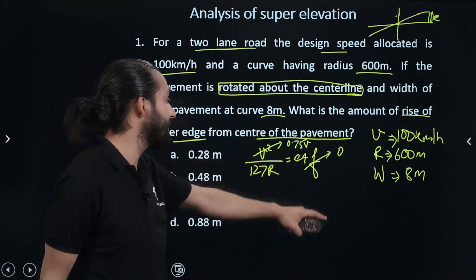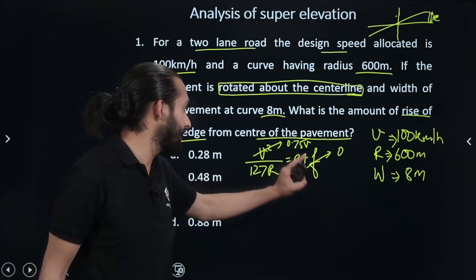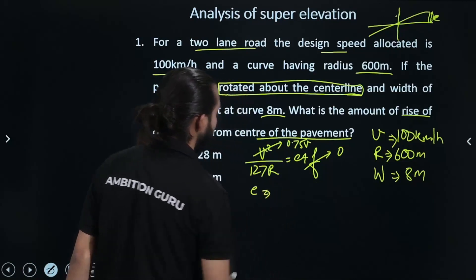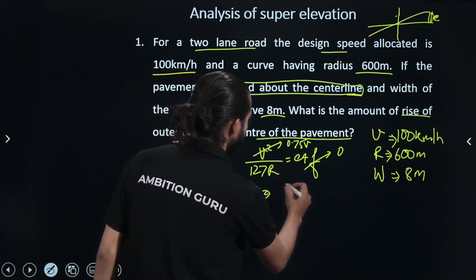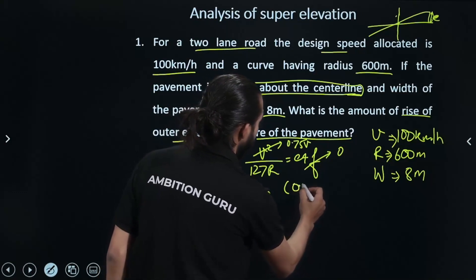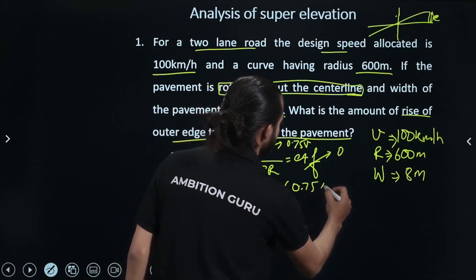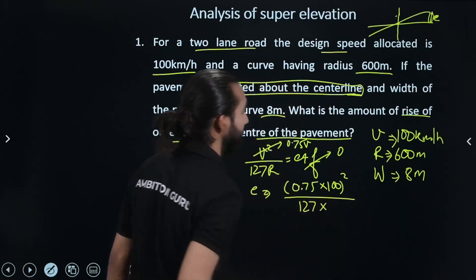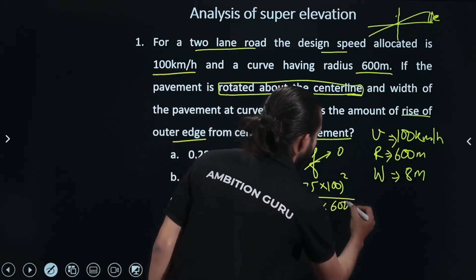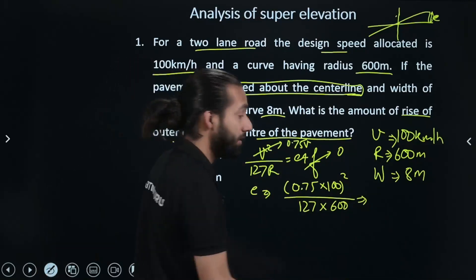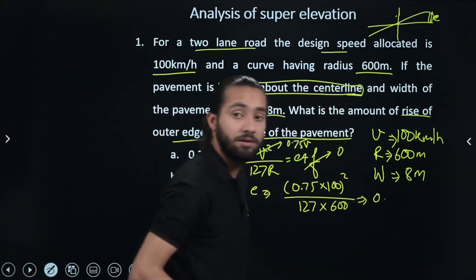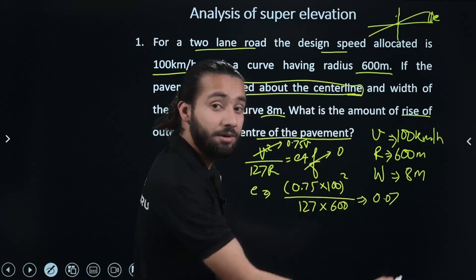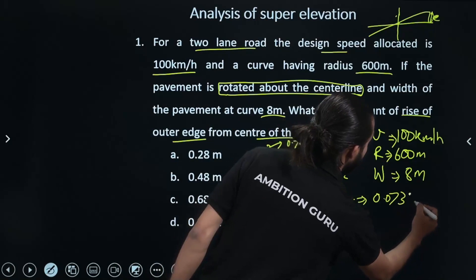When friction is neglected at 75% of design speed, we calculate the super elevation. The formula gives: E equals 0.75 times 100 squared divided by 127 times 600. Computing this value gives approximately 0.0738.